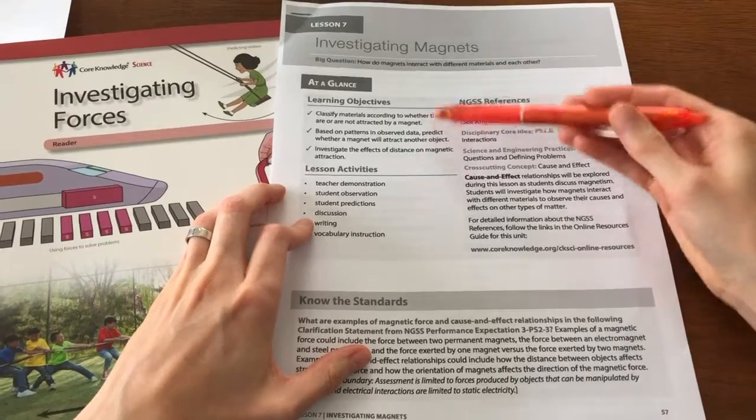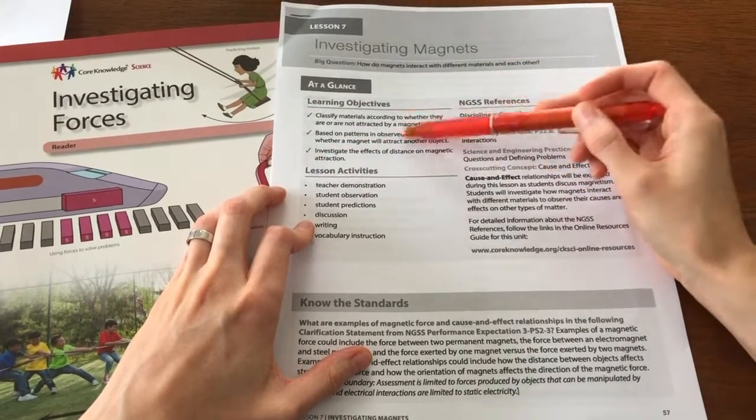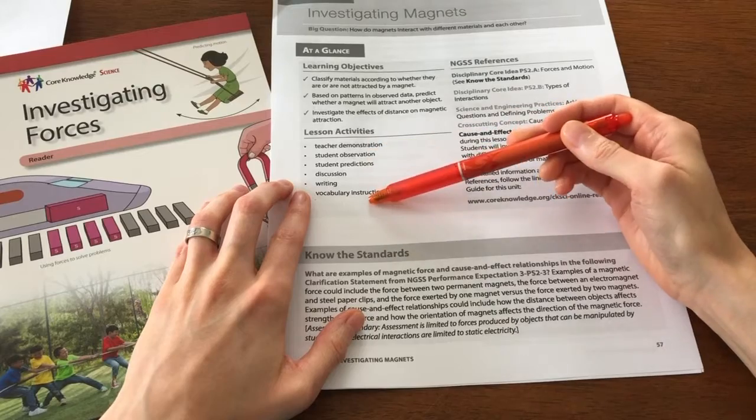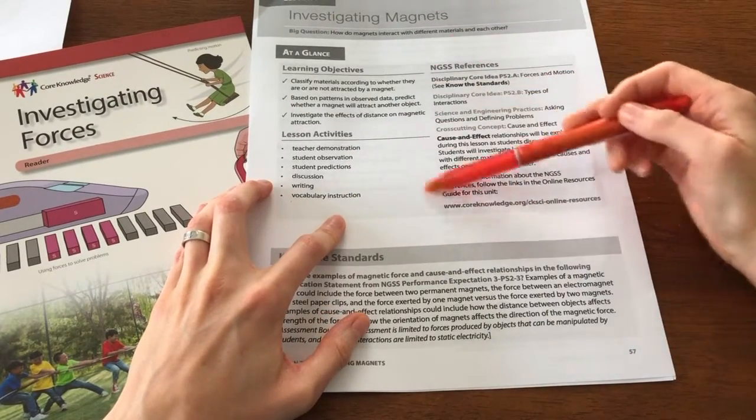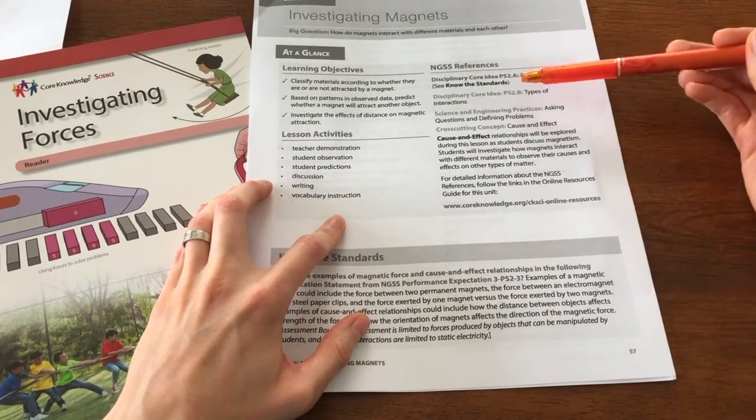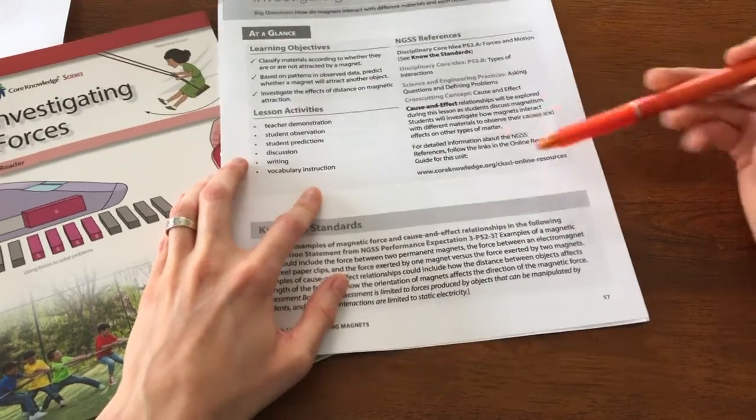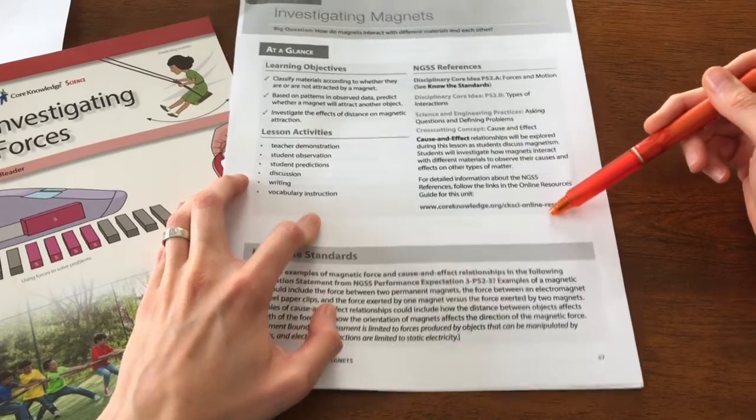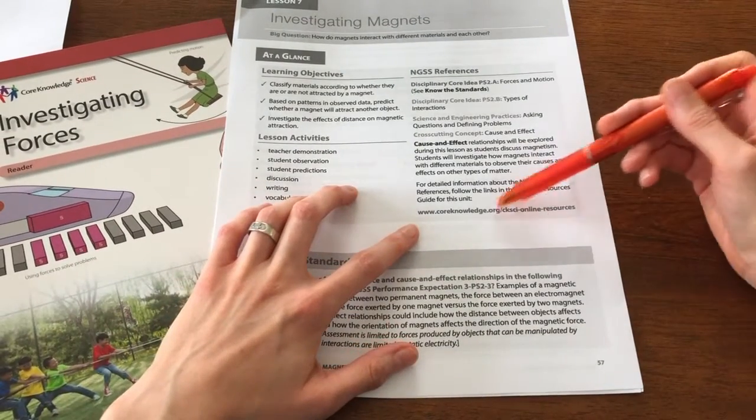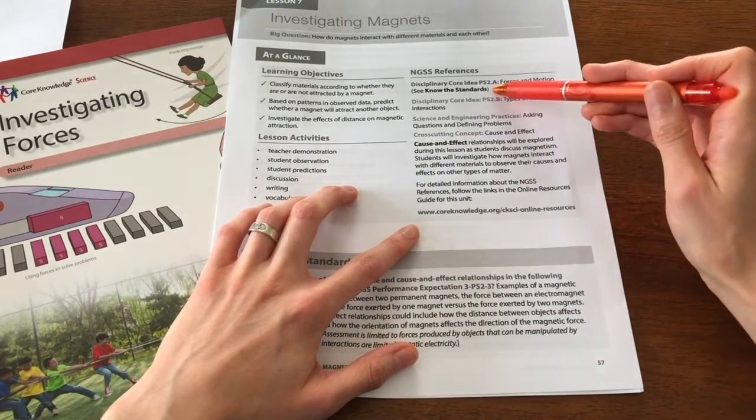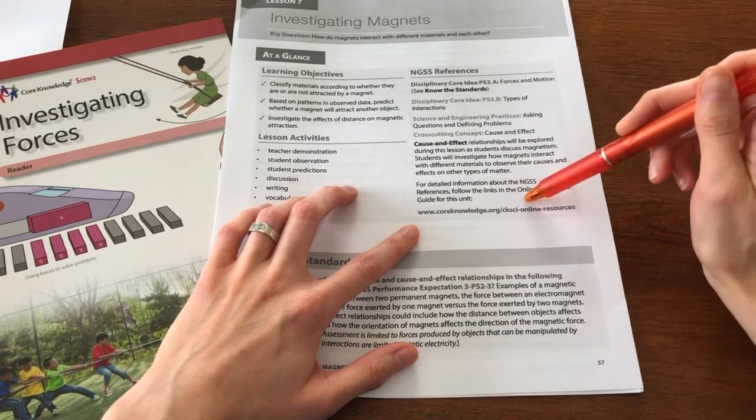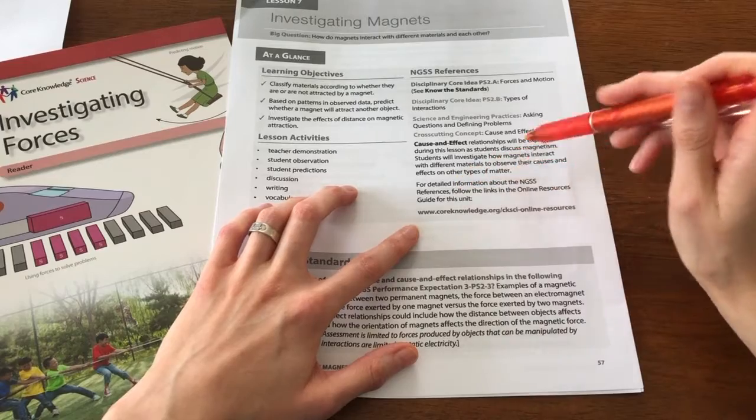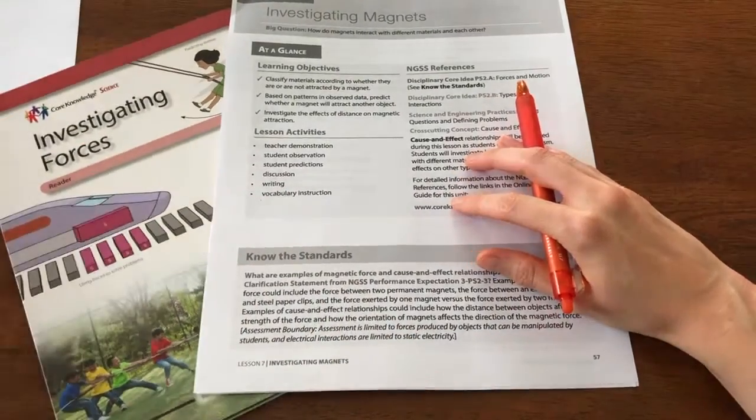Right here, you have your learning objectives, what your goals are, what you're going to be covering, what specific things you're going to be doing. These I really appreciate. These are the science standards you're going to be covering. And it even gives you here, when you click on this link, when you have it up on a computer, it takes you to the actual standards that they're going to be covering. It also covers specifically what areas of science the teacher will be covering and gives you background knowledge.